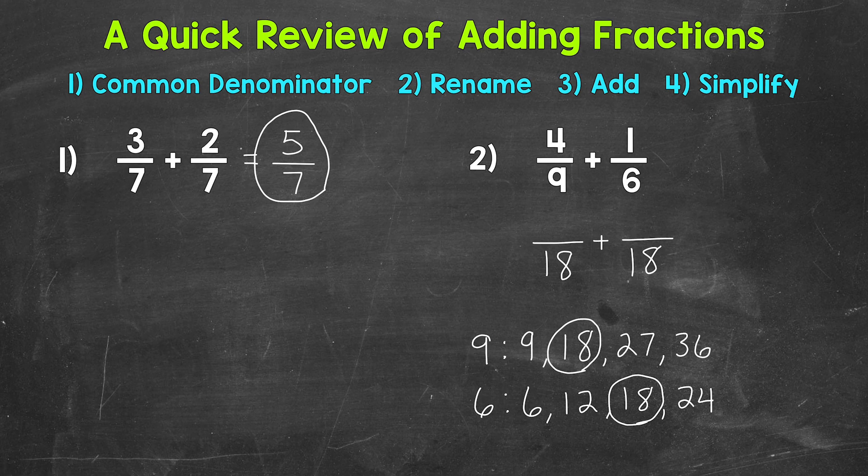We need to think, how do we get 9 to equal 18? Well, 9 times 2 is 18. Whatever we do to the bottom, we have to do to the top in order to keep this equivalent. So 4 times 2 is 8. 8 18ths is equivalent to 4 9ths. But we renamed that original fraction of 4 9ths with that common denominator of 18. So again, we're not changing the value of the problem at all. We're just renaming with that common denominator so we can add.